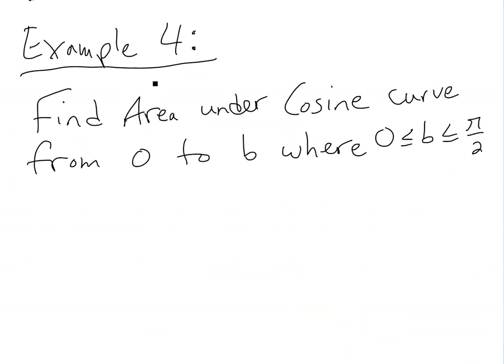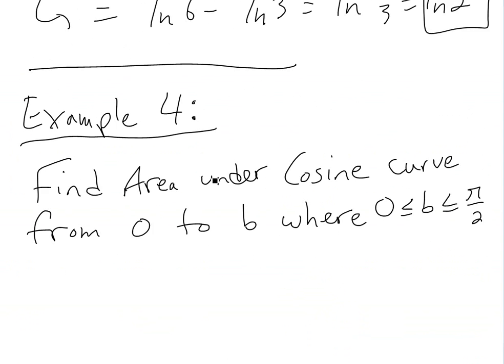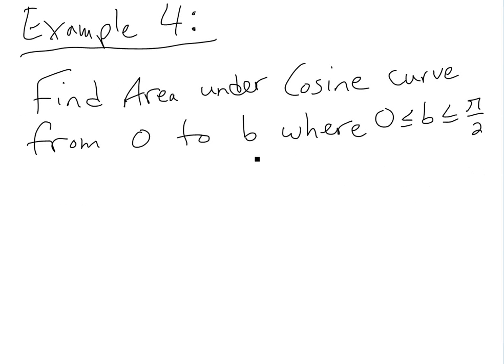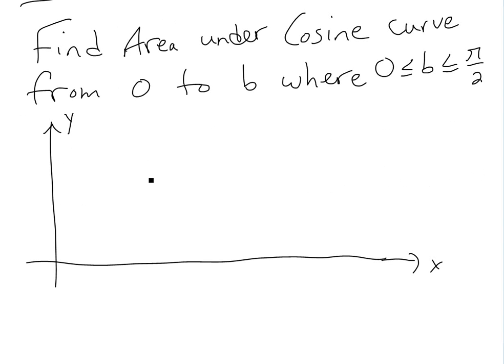The last example is Example 4: find the area under the cosine curve from 0 to b, where b is between 0 and pi over 2. Looking at the graph, it starts at 1 and goes down to 0 at pi over 2.